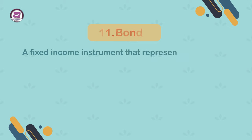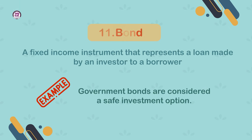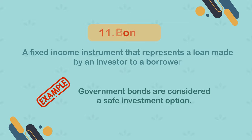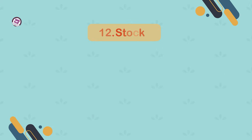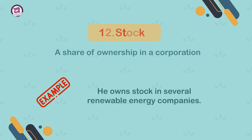11. Bond. A fixed income instrument that represents a loan made by an investor to a borrower. Example: government bonds are considered a safe investment option. 12. Stock. A share of ownership in a corporation. Example: he owns stock in several renewable energy companies.